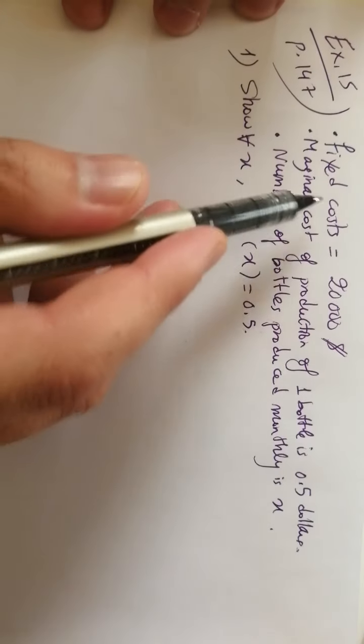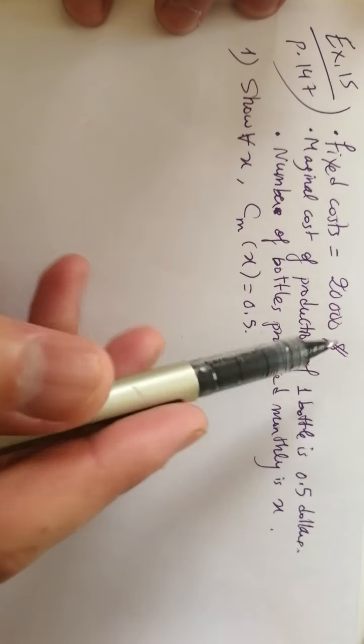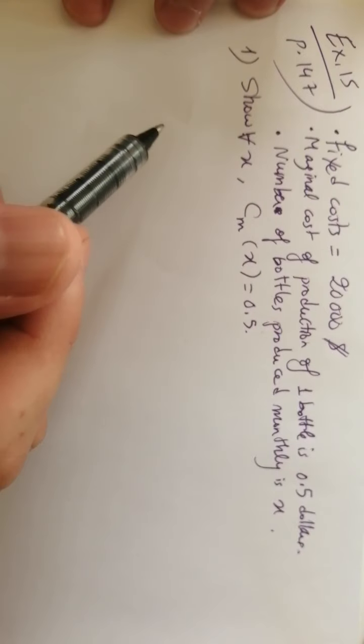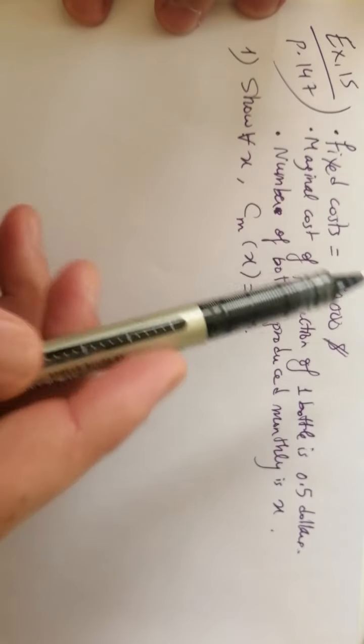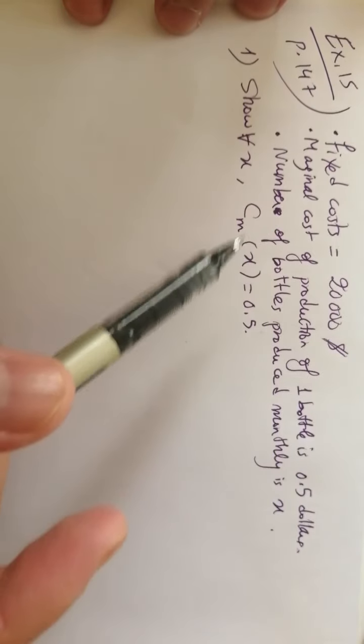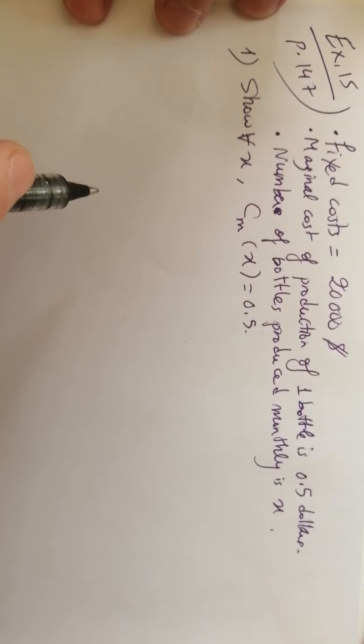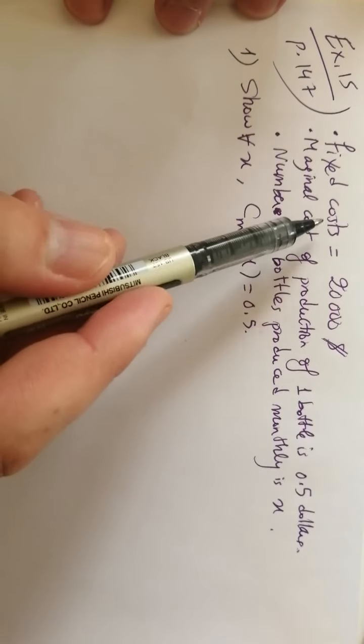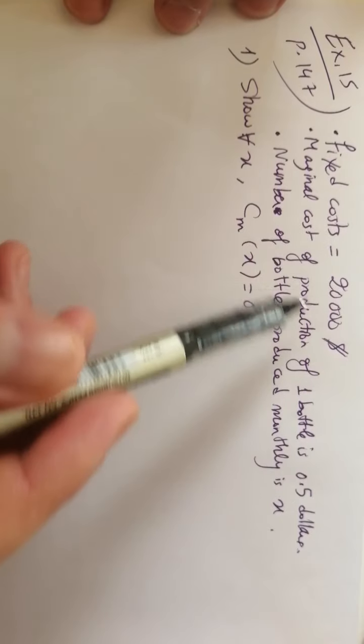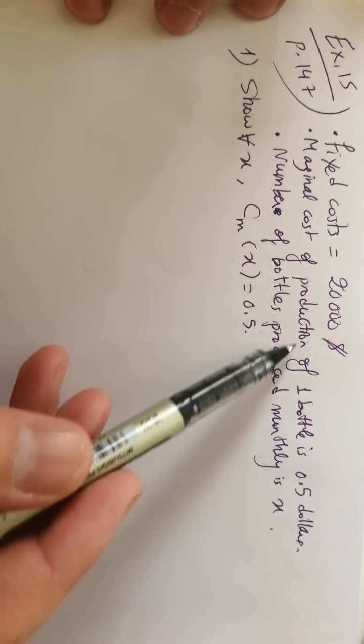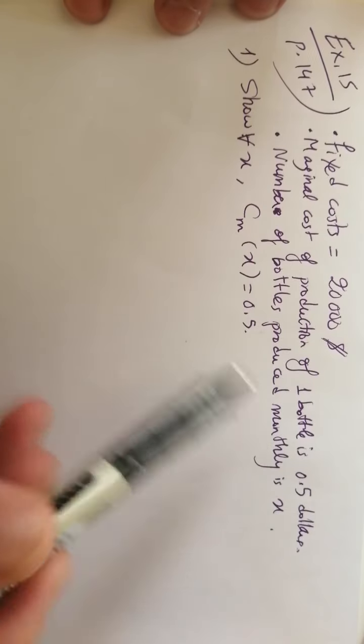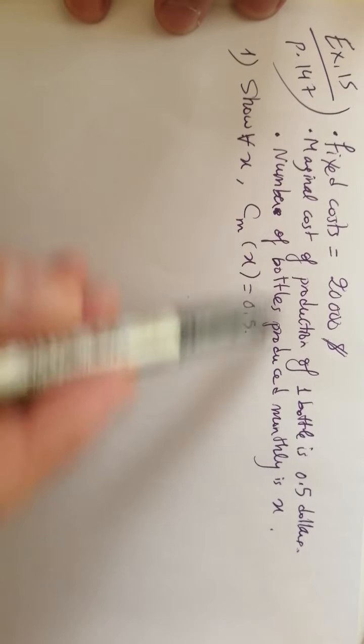Exercise 15: Martina Fixed Costs. We have an enterprise that produces bottles for a certain beverage. The monthly fixed costs reach $20,000, and the marginal cost of production of one bottle is $0.5. Let x be the number of bottles produced monthly.